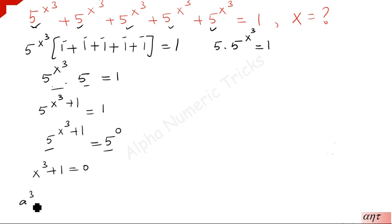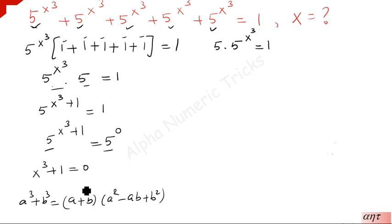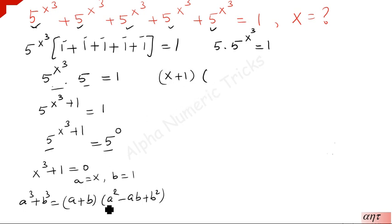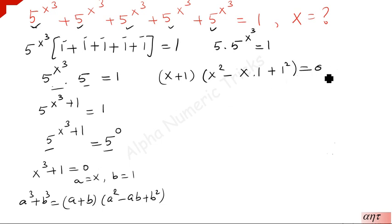This is of the form a cube plus b cube. The formula is: a plus b times a squared minus ab plus b squared. Here a equals x and b equals 1. Applying this formula: x plus 1 times x squared minus x times 1 plus 1 squared equals 0. The product of two terms equals 0 implies each is equal to 0.